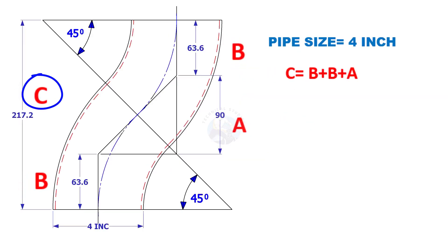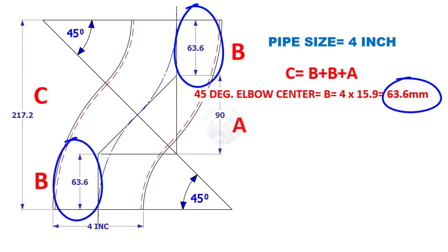The height C is equal to B plus B plus A. Elbow center B is 4 inch multiplied by 15.9. 15.9 is constant. So the value of B equals 63.6 millimeters.